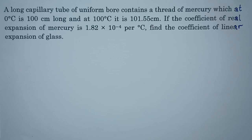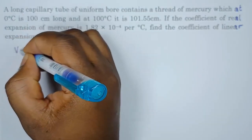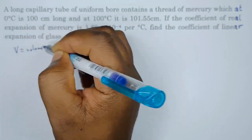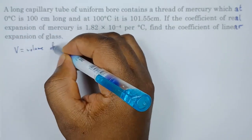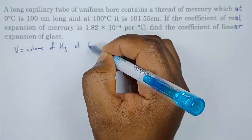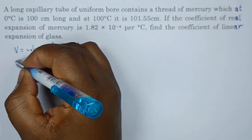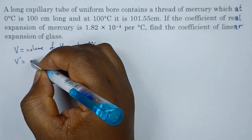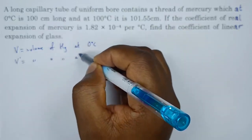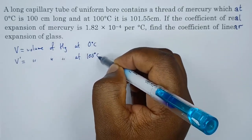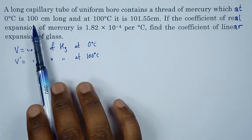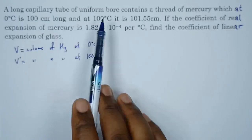To start with, we are going to say the volume of mercury at zero degrees Celsius we call V. Then V prime will be the volume of mercury at 100 degrees Celsius, because we are looking at zero degrees as well as at 100 degrees.